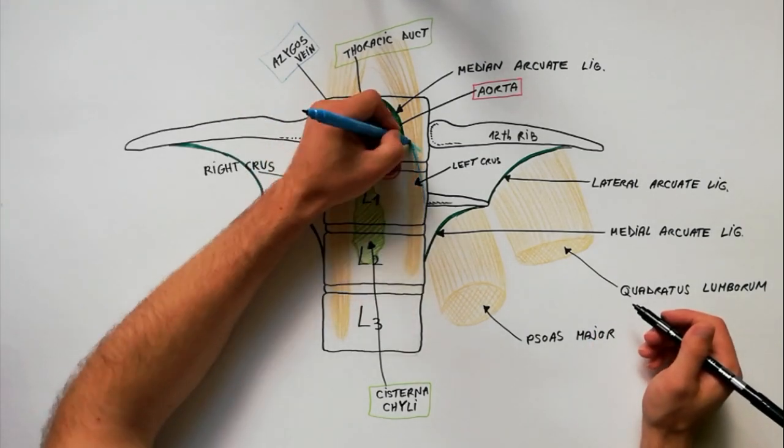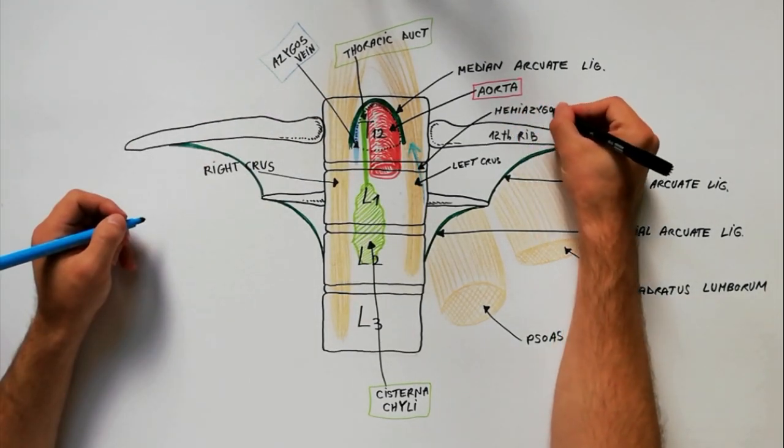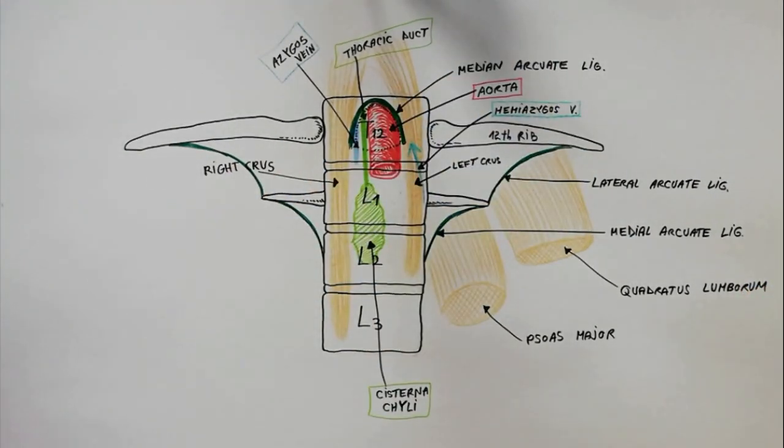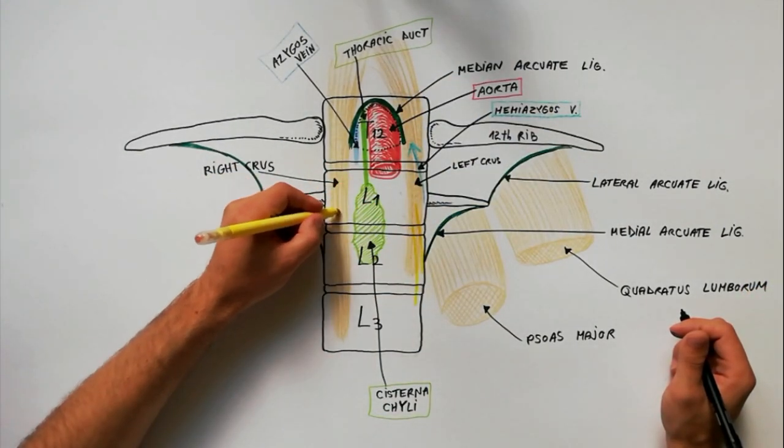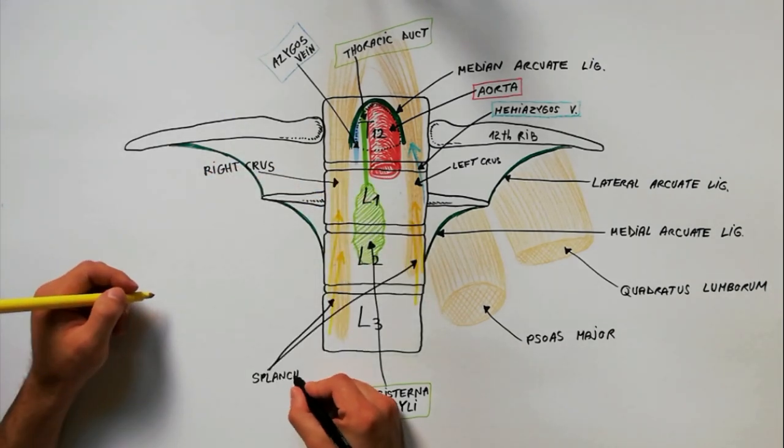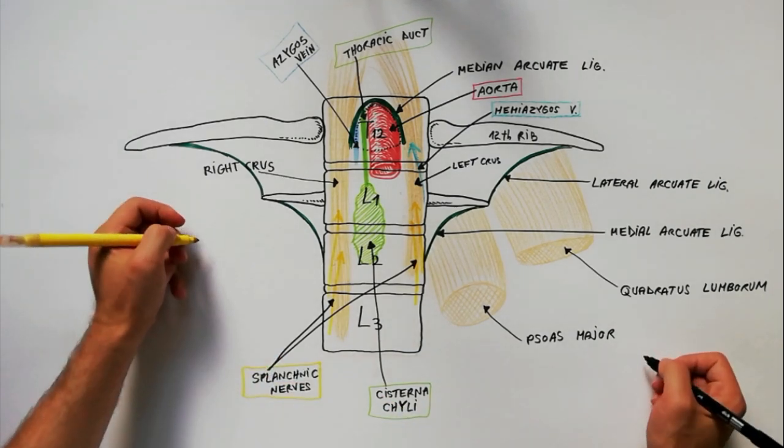The hemiazigos vein passes through the substance of the left crus of the diaphragm. The right and left splanchnic nerves are passing by way of small foramina located in the substance of the right and left crura respectively.